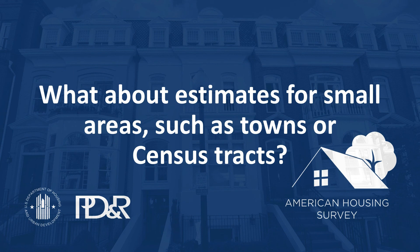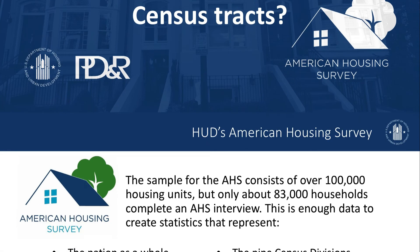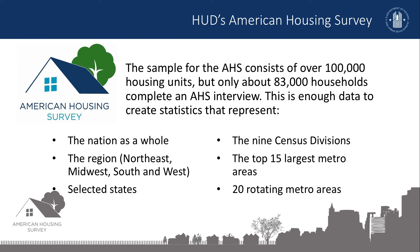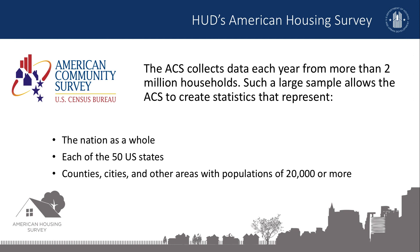Finally, we'll look at how the surveys compare when it comes to estimates for small areas, such as towns or census tracts. The AHS sample consists of over 100,000 housing units, but only about 83,000 households complete an AHS interview. This is enough data to create statistics that represent the nation as a whole, the region — Northeast, Midwest, South, and West — select states, the nine census divisions, the top 15 largest metro areas, and 20 rotating metro areas. The AHS does not have a large enough sample to generate statistics specific to smaller areas such as cities, towns, or census tracts. The AHS is not the right data source for users interested in studying or comparing counties or other smaller areas.